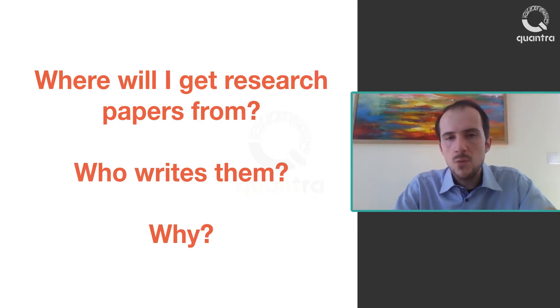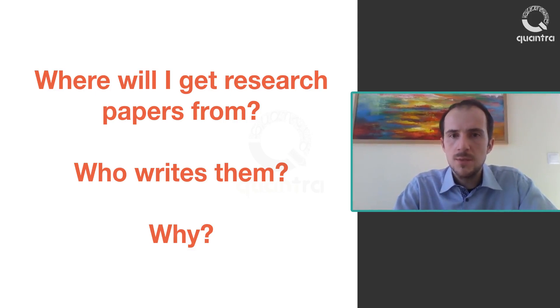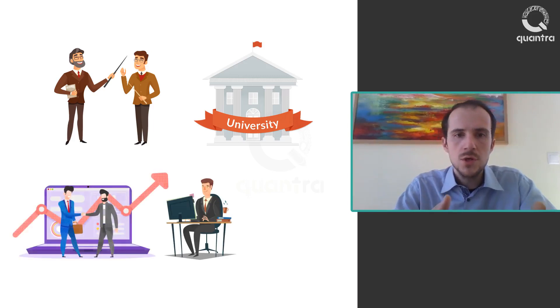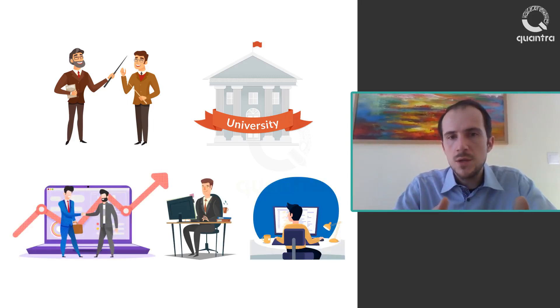There are some common questions repeatedly asked by people outside of academic research cycles: Where will I get research papers from? Who writes them? Why? Tens of thousands of research papers related to algo trading and systematic investing are published every year. Most of the research is produced by academia such as professors, PhDs, and universities. But a significant number of papers are published by professionals such as asset management companies and brokerage houses. A lot of the research can be easily found via Google or special databases such as SSRN.com.